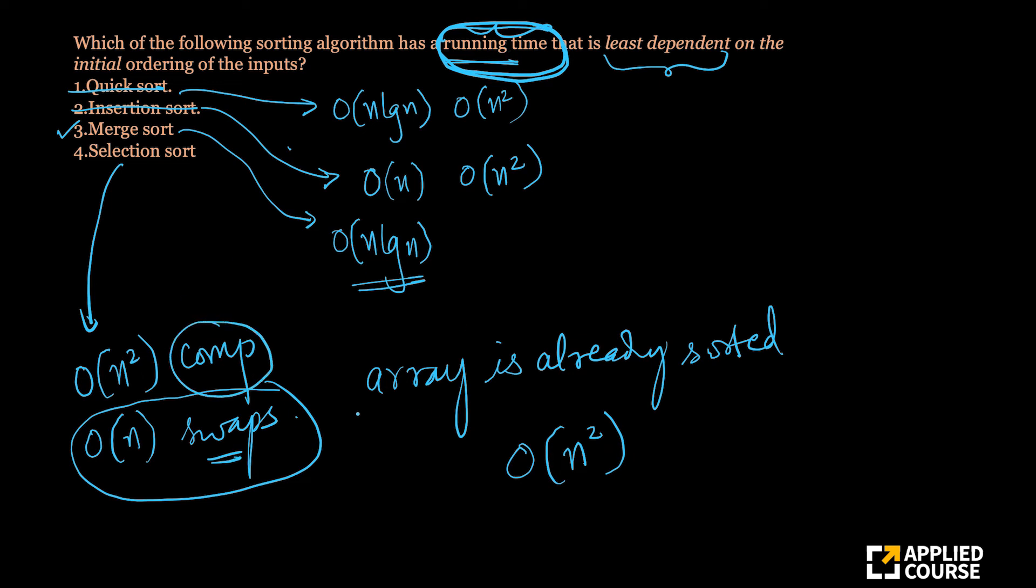So the eventual running time of selection sort would depend on whether the array is already sorted or not, while the time complexity does not change. The actual running time itself, the physical clock time itself would differ slightly, because if your array is already sorted, you do not require these swaps to be taking place.